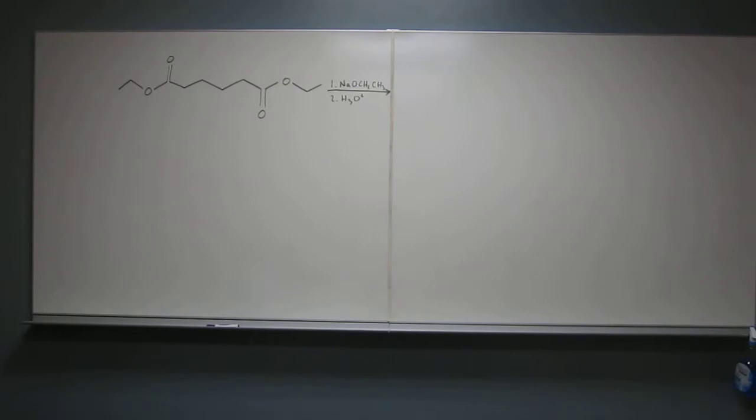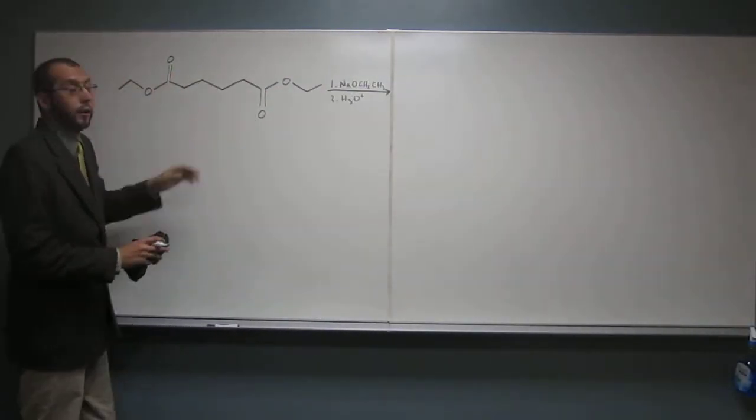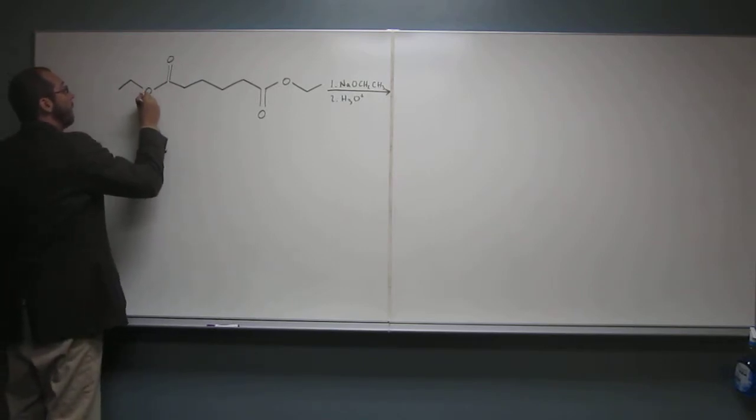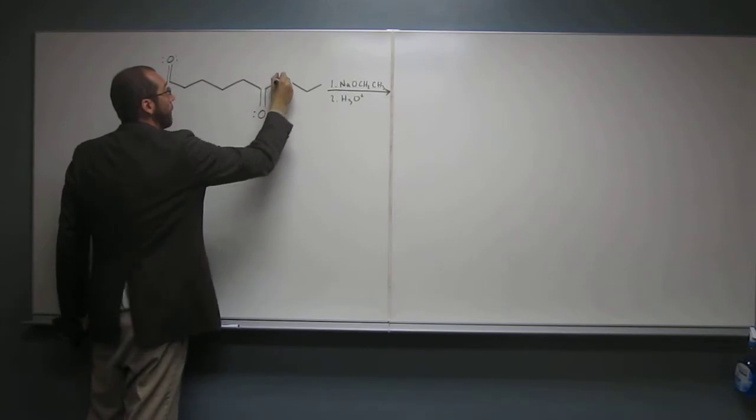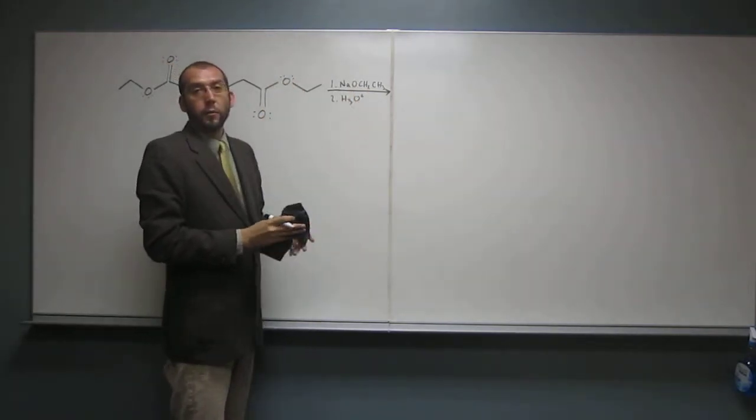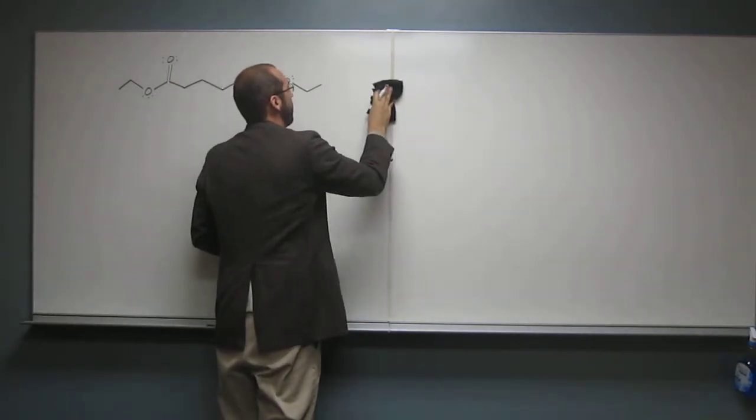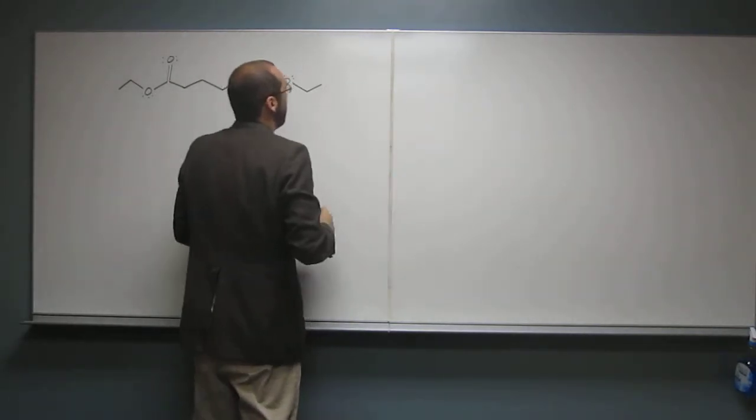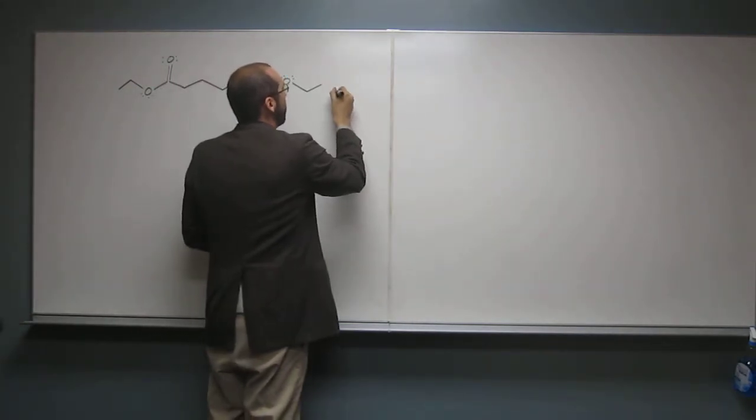So, the first thing we're going to do is we've got the ester here, so remember, put all your lone pairs first. It's going to react with sodium methoxide there, and then the second step is going to be H3O+. I guess, let's write out what the product would be first.